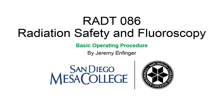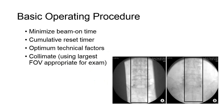Basic Operating Procedure: Every fluoroscopic examination should take some basic things into account. Minimizing beam on time should be a priority. This is basically using intermittent fluoroscopy or brief looks whenever practical, rather than using continuous live fluoro, to minimize the exposure to the patient.